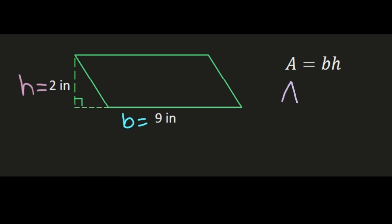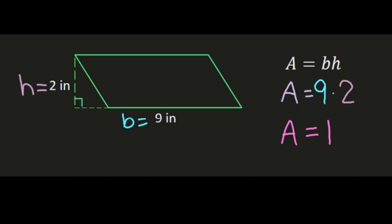So now we can go back to our formula: area equals base times height. We'll take our base of 9 inches and substitute it for B in the formula, times our height of 2 inches substituted for H. That gives us area equals 9 times 2. 9 times 2 is 18, and since this parallelogram was measured in inches, our area is going to be 18 inches squared.